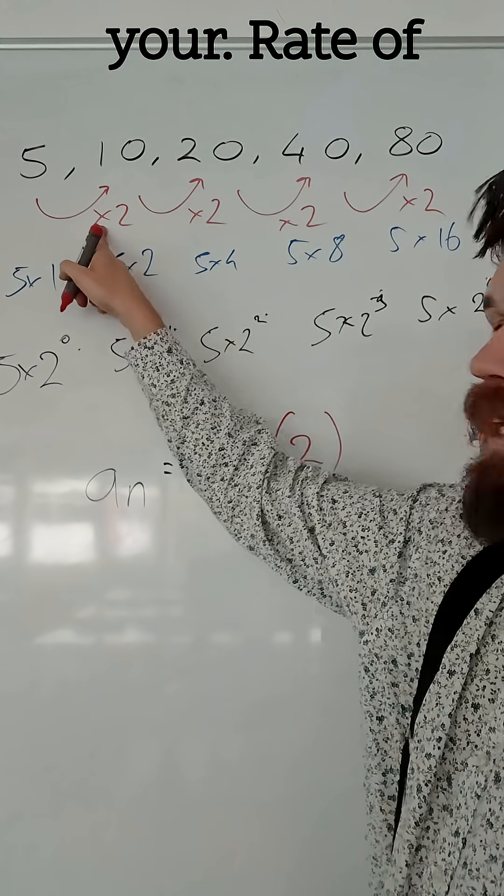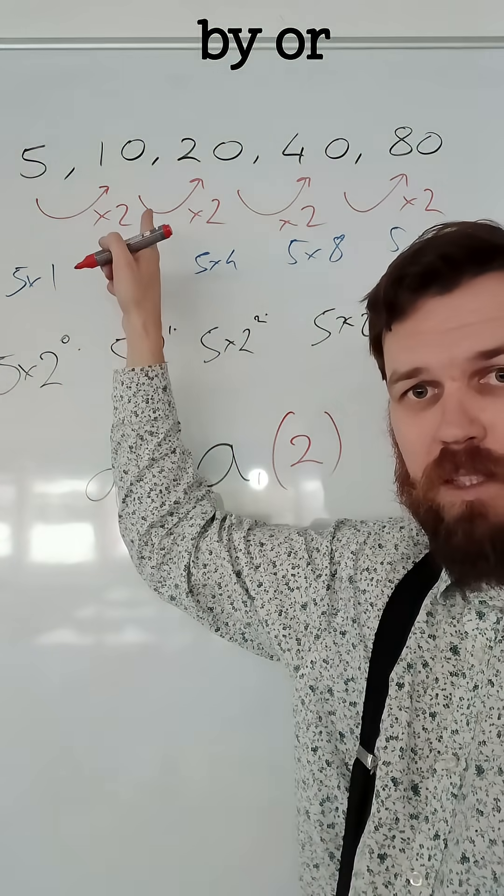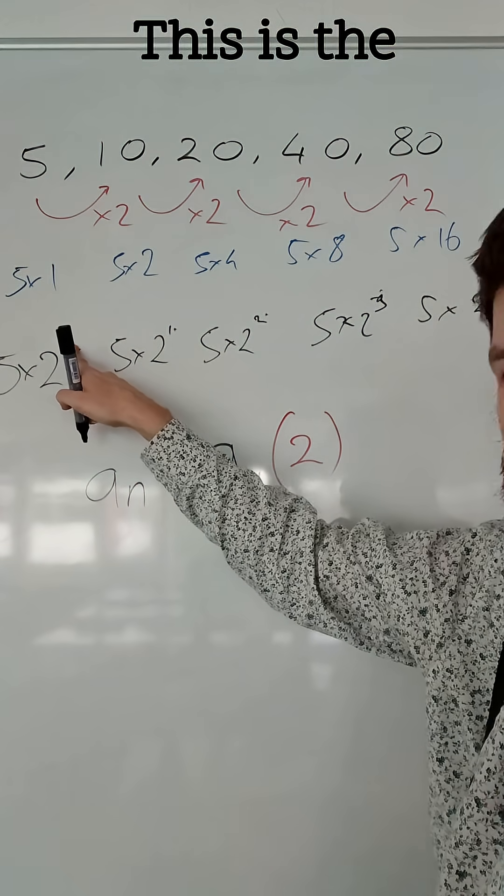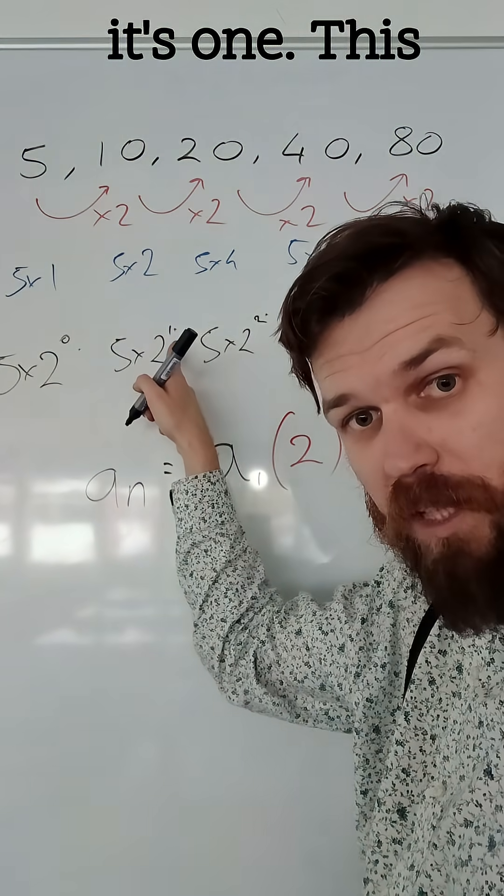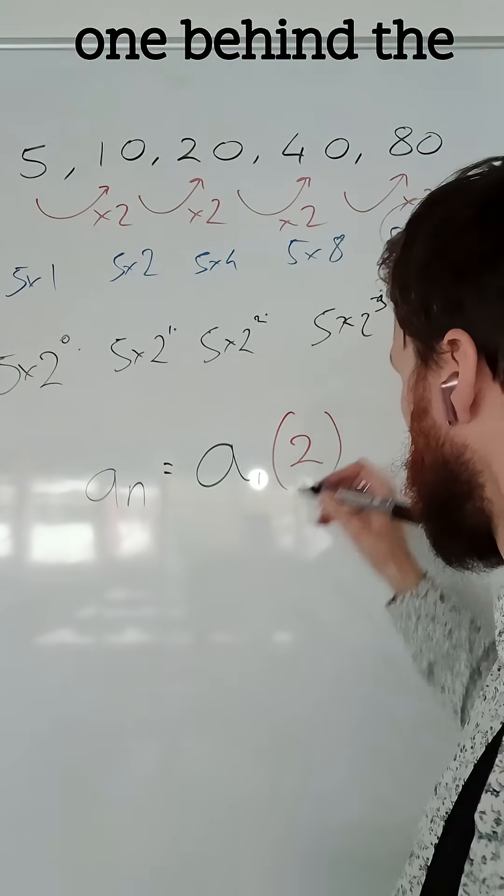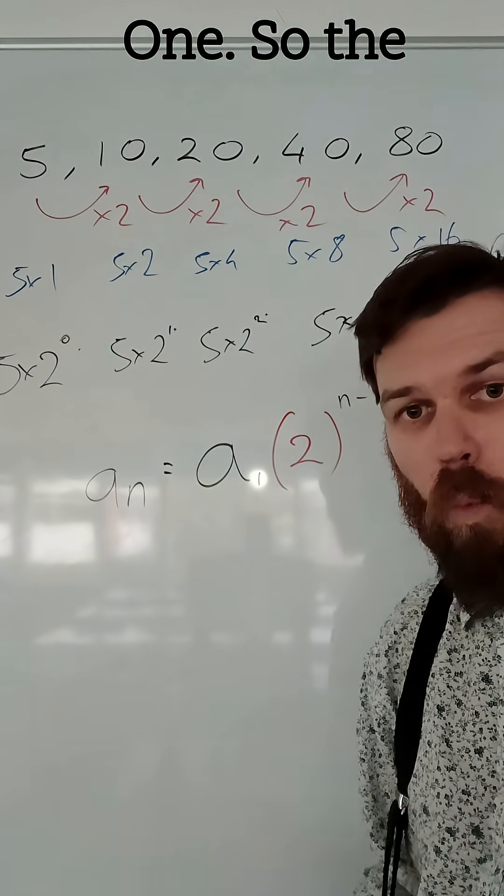multiplied by your rate of change, by your scale factor, by your multiplier, raised to the power of, well, this is the first term and it's 0. This is the second term and it's 1. This is the third term and it's 2. It's always going to be 1 behind the term you're looking for. So n minus 1.